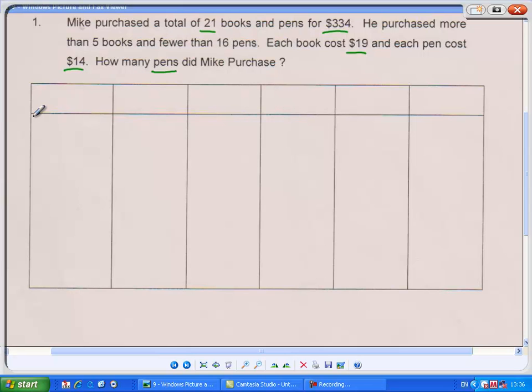We need to do a guess and check. So let's draw a table first. The number of books he bought, the cost of the books in dollars, the number of pens he bought, the cost of the pens in dollars, the total cost of the books and the pens, and the check.